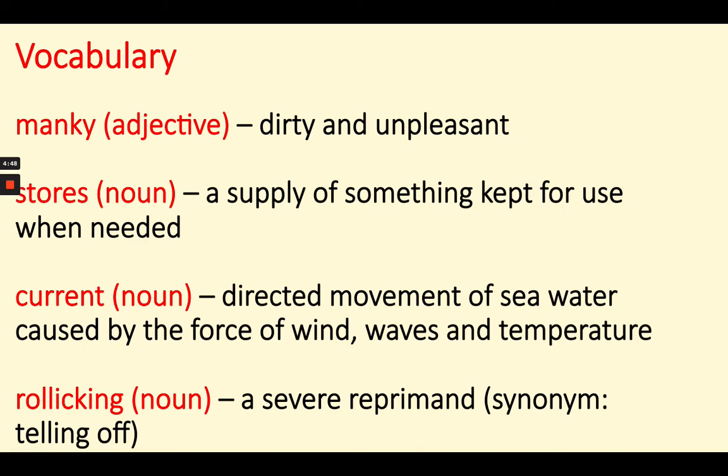Our third word today is current. A current is also a noun — it's a thing in the ocean. It is the directed movement of seawater caused by the force of wind, waves, and temperature. And finally, our fourth vocabulary word is rollicking. Rollicking is a severe reprimand — it's somewhat like a telling off. So if you get a rollicking, you've just gotten a telling off.